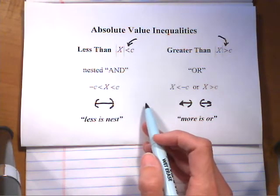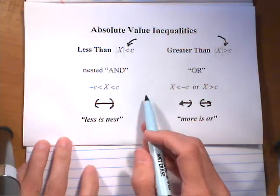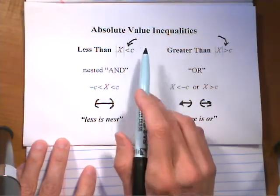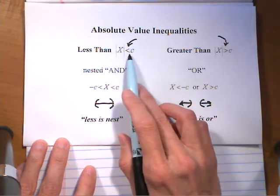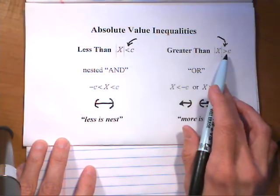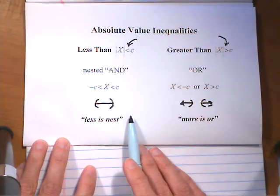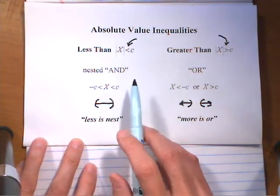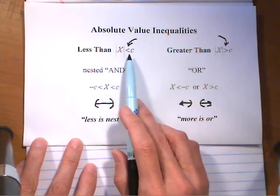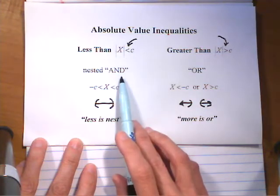We're going to solve the absolute value inequality worksheet from in class the other day. What we're always going to look for is do we have a less than or a greater than, and depending on which one you have, that's going to point you in what direction to go for solving. If it's a less than, it's always going to be a compound inequality — a nested and.